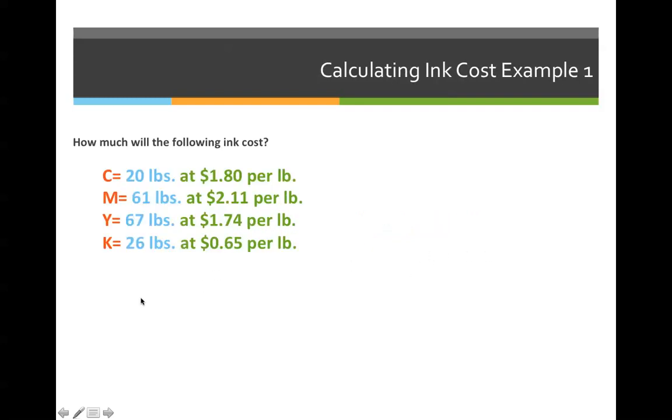If we were to quickly do the problem here, how much will the following ink cost? We have 20 pounds of cyan. These are the same examples from the previous part of the slideshow, so they should all line up. We calculated earlier that we needed 20 pounds of cyan. If we were going to purchase that and the ink company told us it cost $1.80 per pound, we can multiply 20 times 1.80 to get the total price of ink.